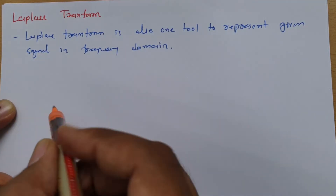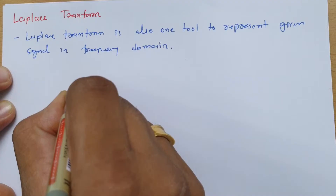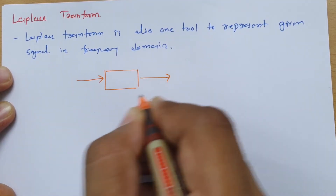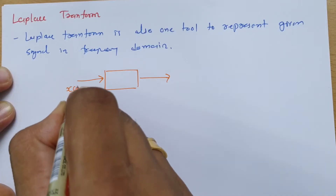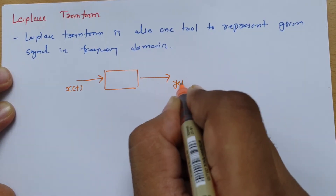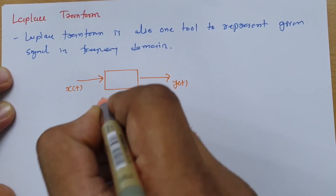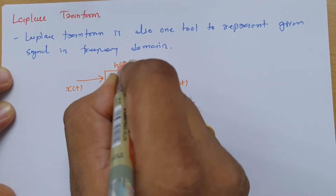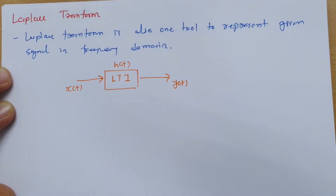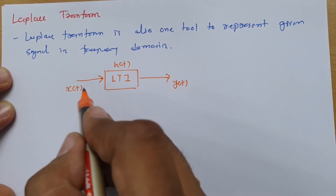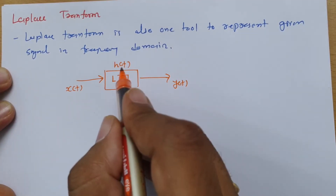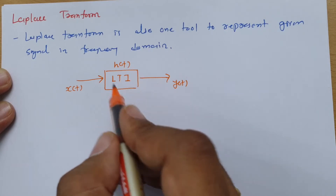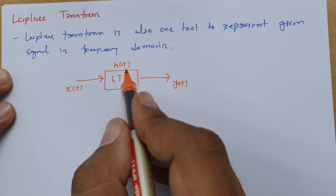To explain that, I will consider a system where I give an input and obtain an output. This system is a linear time-invariant system having impulse response h(t). So the input is x(t), the output is y(t), and the linear time-invariant response of the system is h(t).